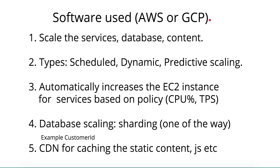Dynamic scaling is based on need — when you don't know exactly when traffic will hit. When traffic reaches a certain level and you want to scale to meet customer needs, that's dynamic scaling. You set a policy: when CPU threshold goes beyond 60%, add one more EC2 instance; or when transactions per second exceed a certain limit, add another EC2 instance. These policies can be configured through the AWS command line or console, and a similar approach exists for Google Cloud Platform.